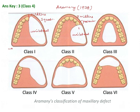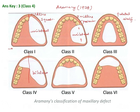Class 2 involves posterior teeth and is unilateral. Class 3 defect includes only the palatal shell — the remaining natural teeth are not affected, so other teeth are present. Class 4 is a bilateral defect that includes the midline, with anterior teeth on one side and anterior and posterior teeth on the other side — the entire premaxilla is affected along with the posterior part of one quadrant.